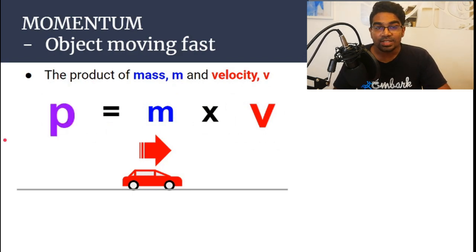So, when the velocity is large, the momentum is large. And when the velocity is small, the momentum is small. Momentum is directly proportional to velocity.